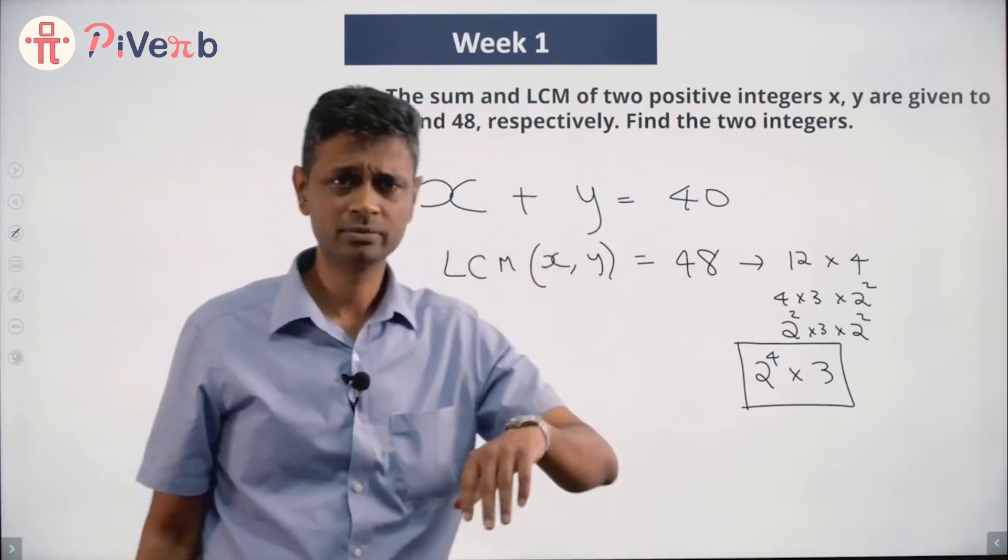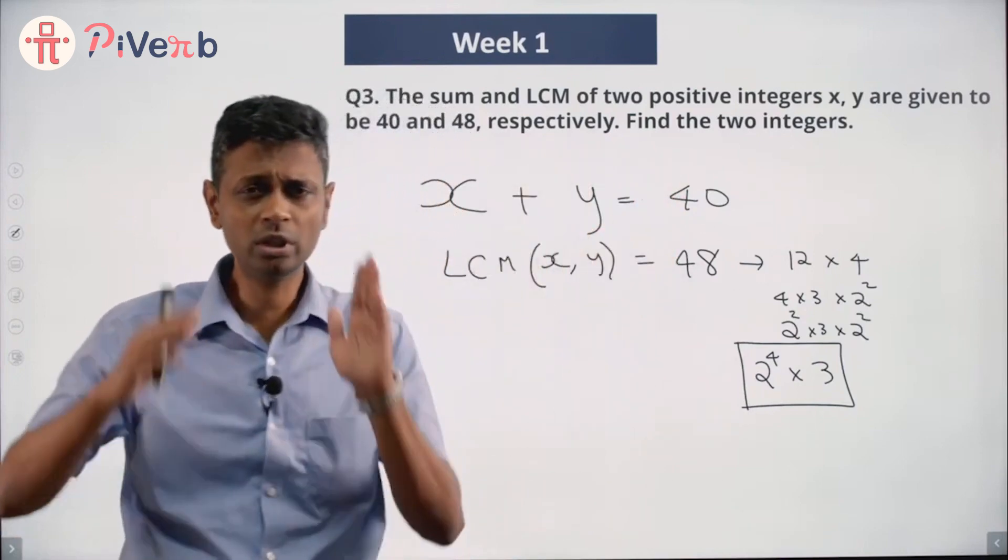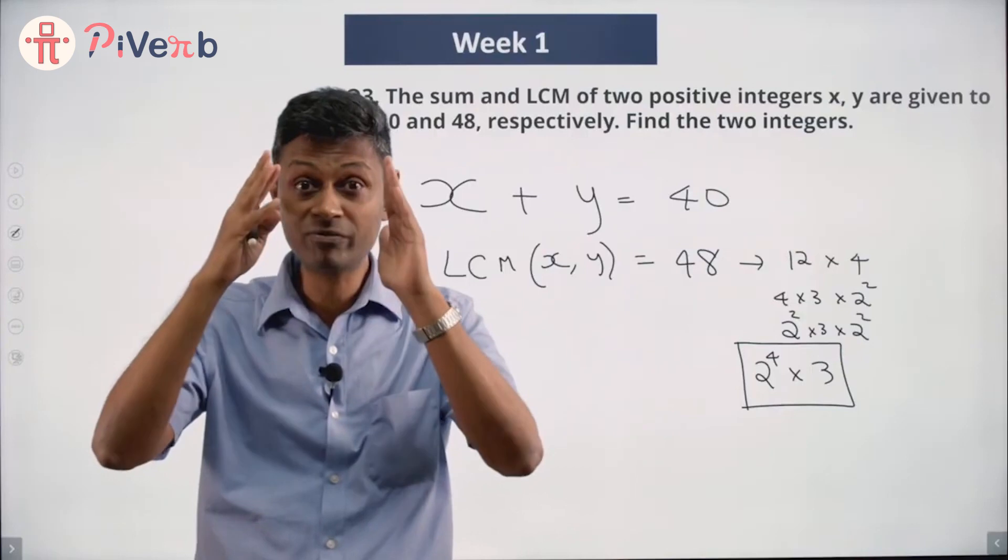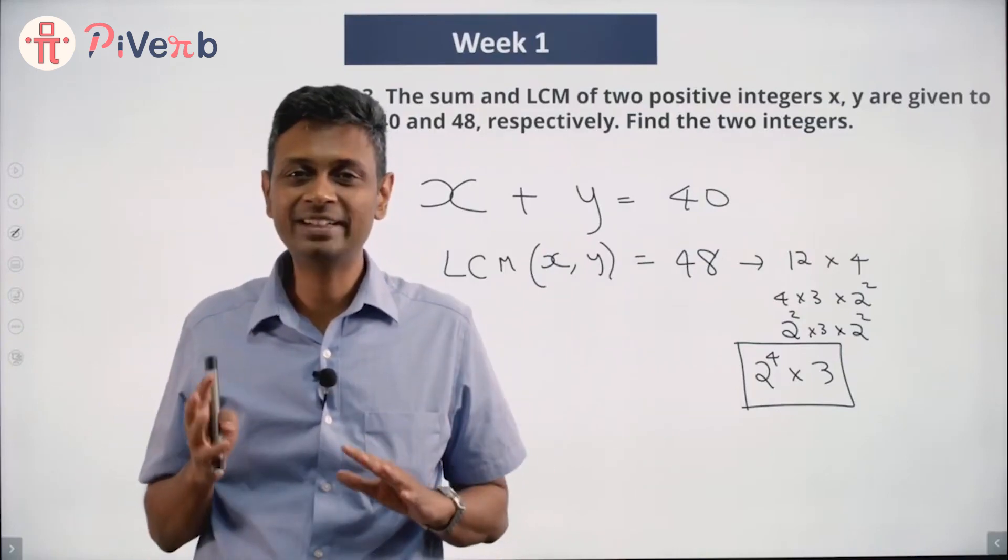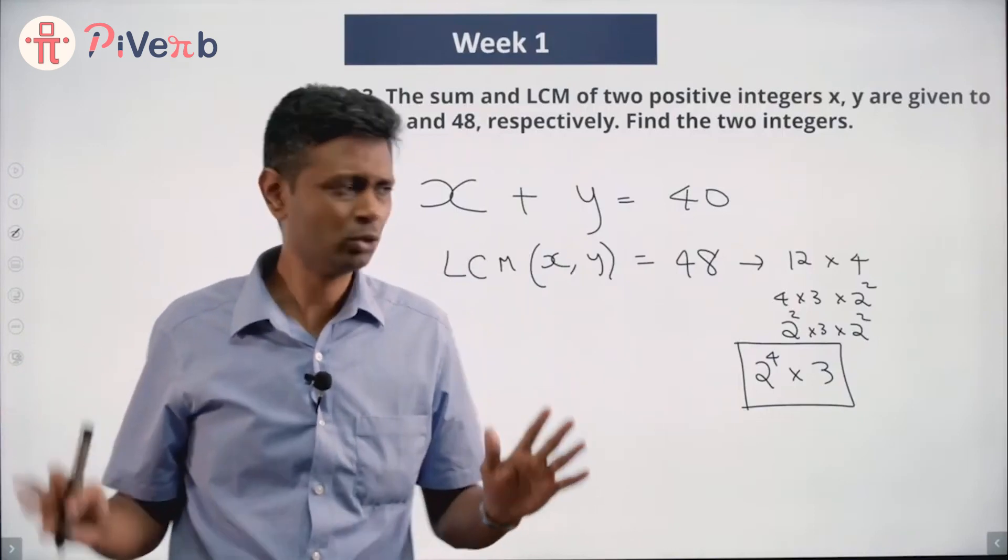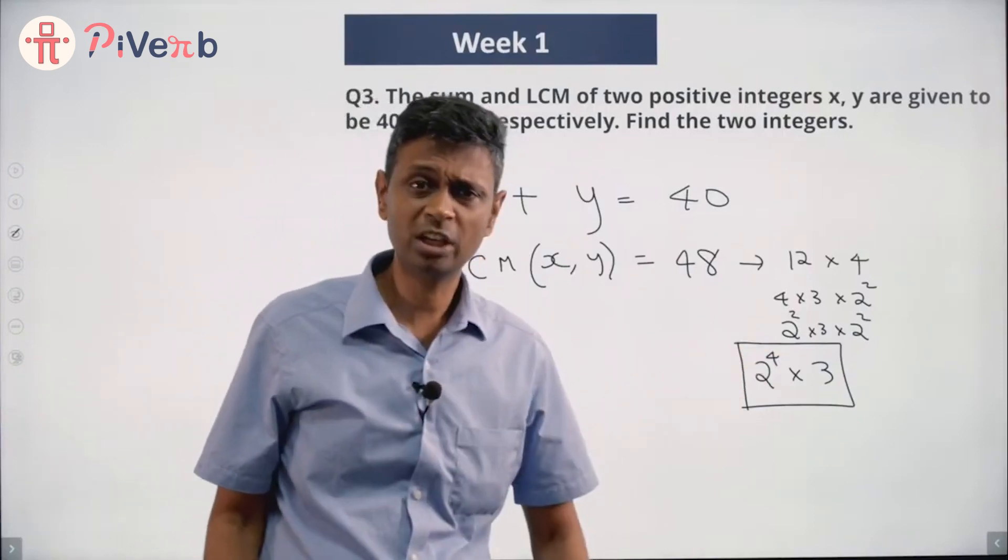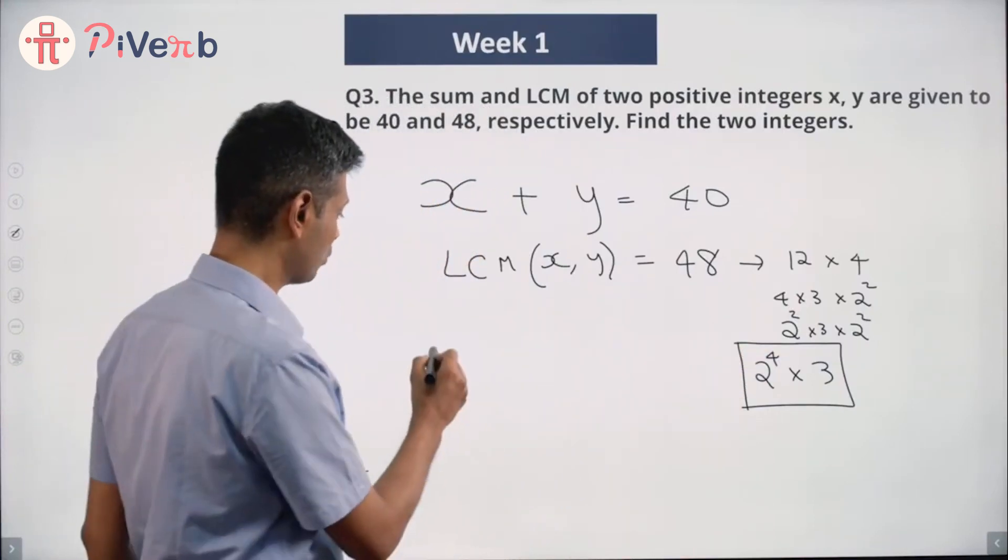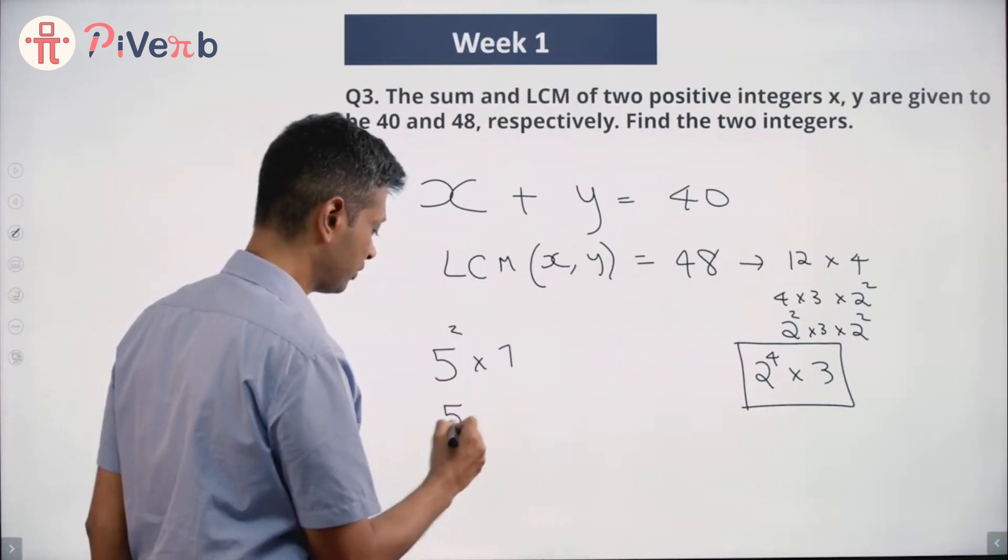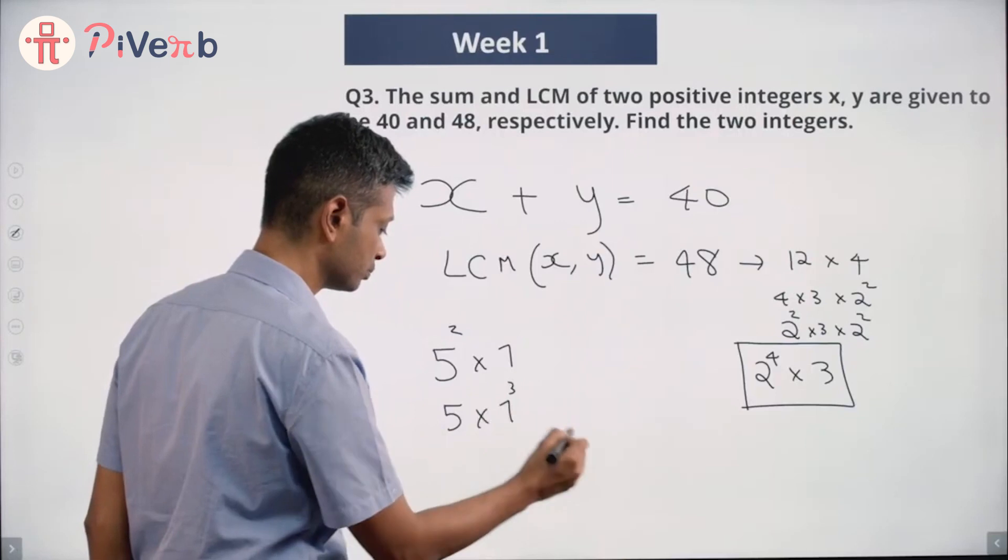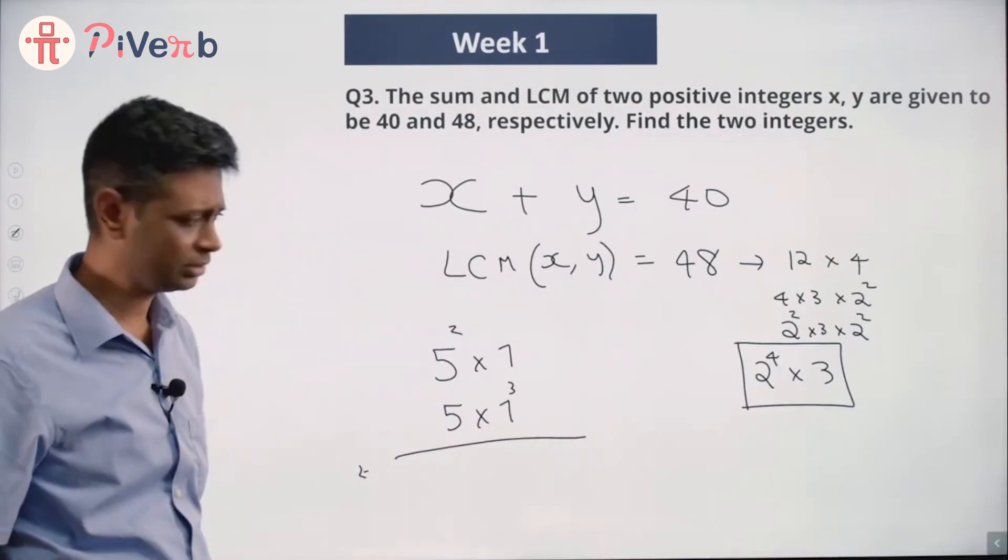Now I'm going to forget about this question for a moment. I want to think about the prime factorization of two numbers and then finding the LCM of those. Let's say I have one number is 5 squared into 7, and another number is 5 into 7 cubed.